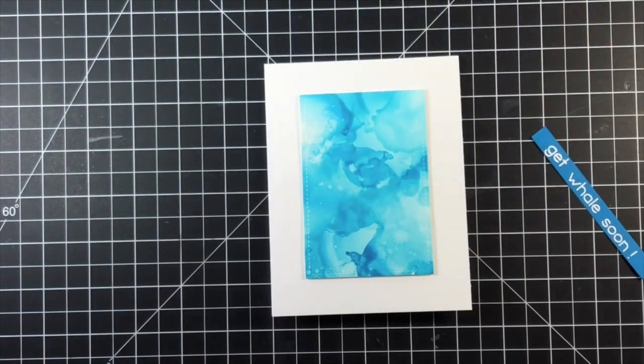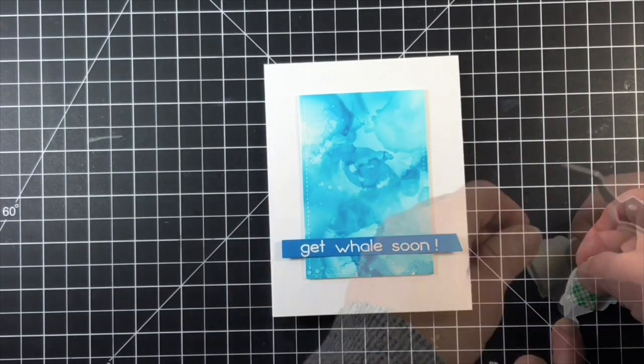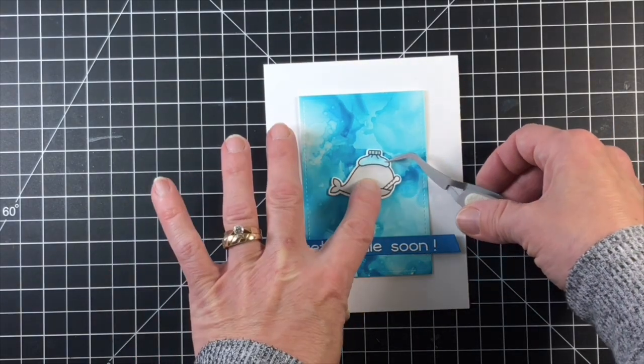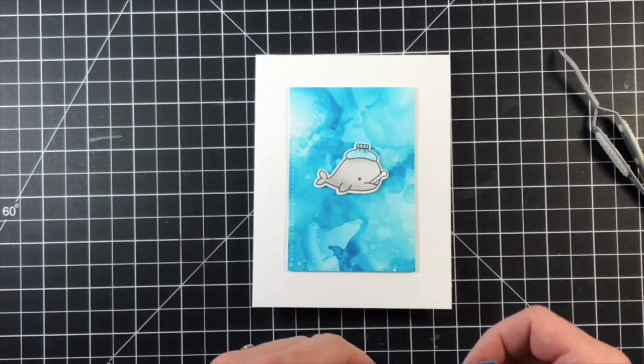To put the card together I added foam tape to the back of the alcohol ink background. The sentiment strip was adhered directly onto the panel and I finally put another piece of foam tape on the back of the whale. I love using lots of dimension on my cards.